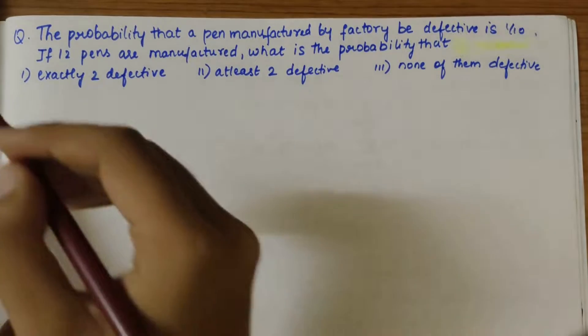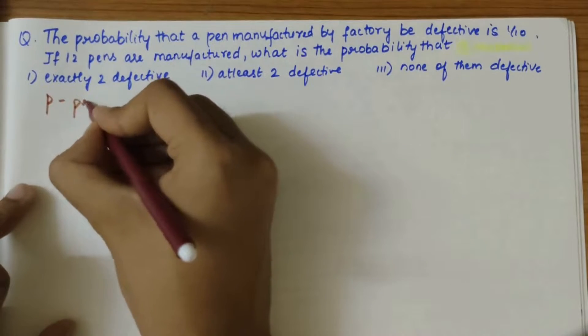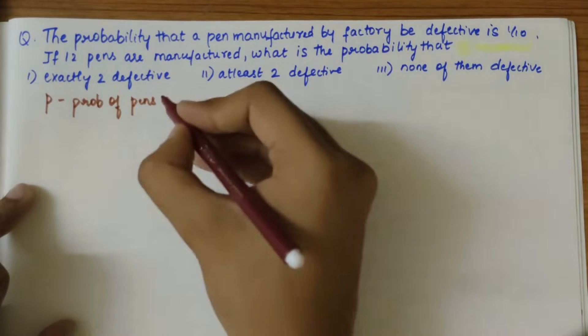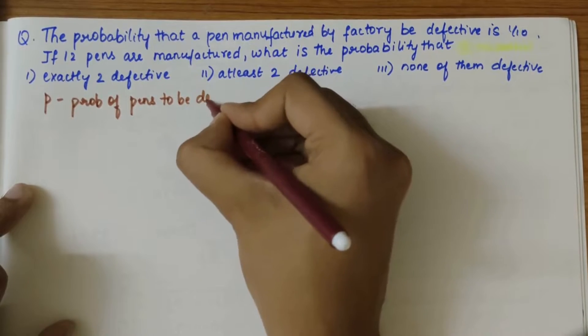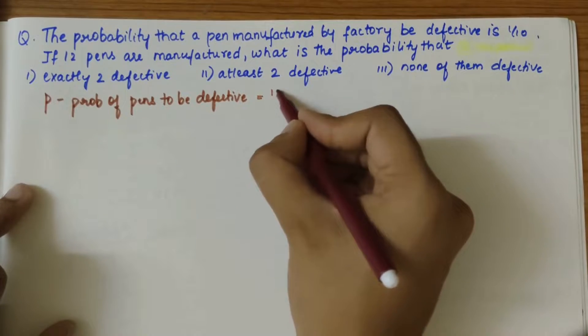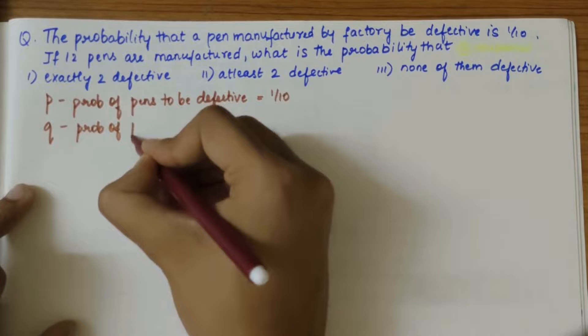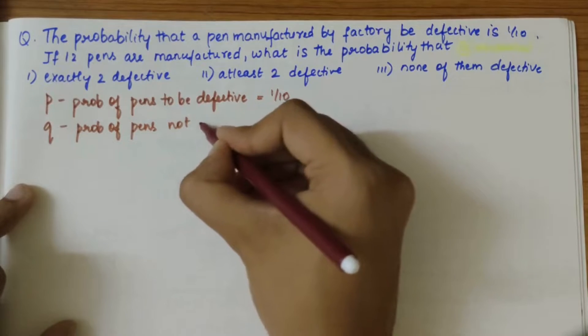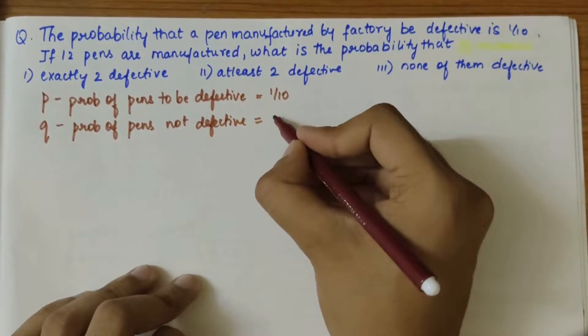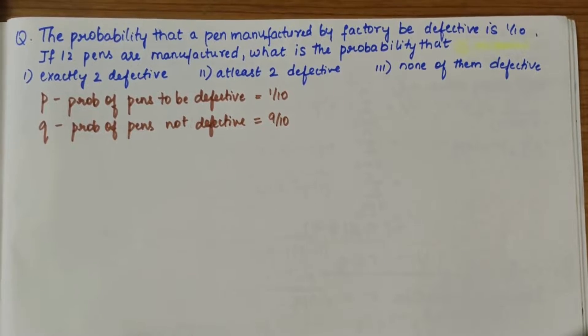Let's first consider P to be the probability of pens to be defective, that is 1/10. So Q would be the probability of pens not defective, that is 1 minus 1/10, which equals 9/10.